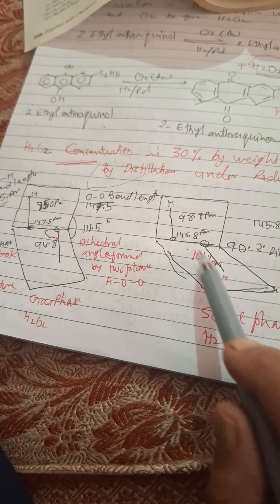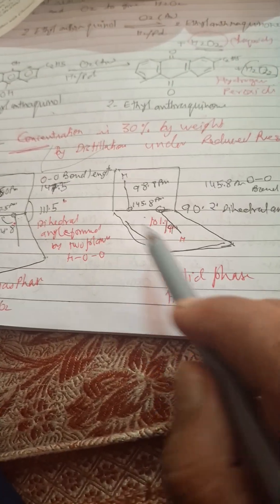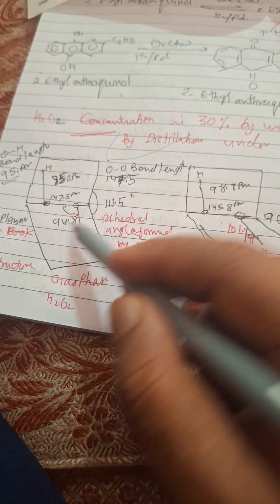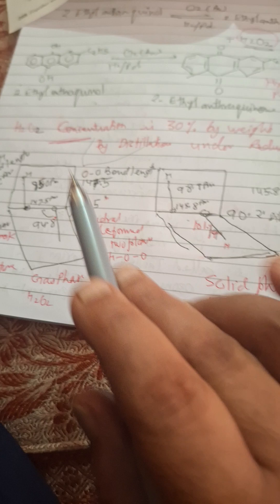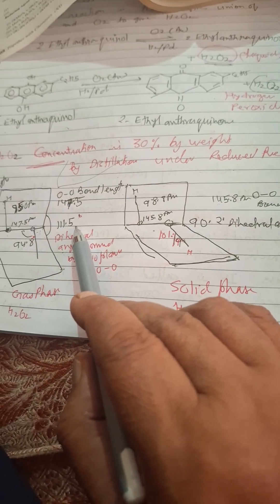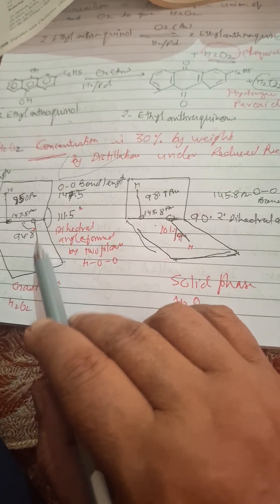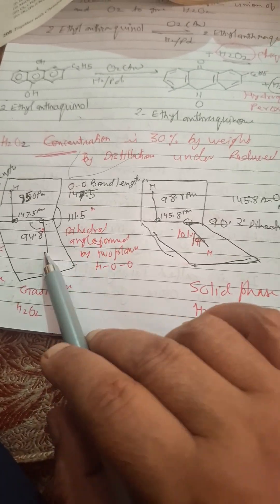Bond angle is 94.8 in gas phase, here bond angle is 101.19 in solid phase. When the dihedral angle is 90, this angle will be more. And when the dihedral angle is broader, this angle is reduced. Simple way. You can remember that 111.5 and 94.8, just like a telephone number.